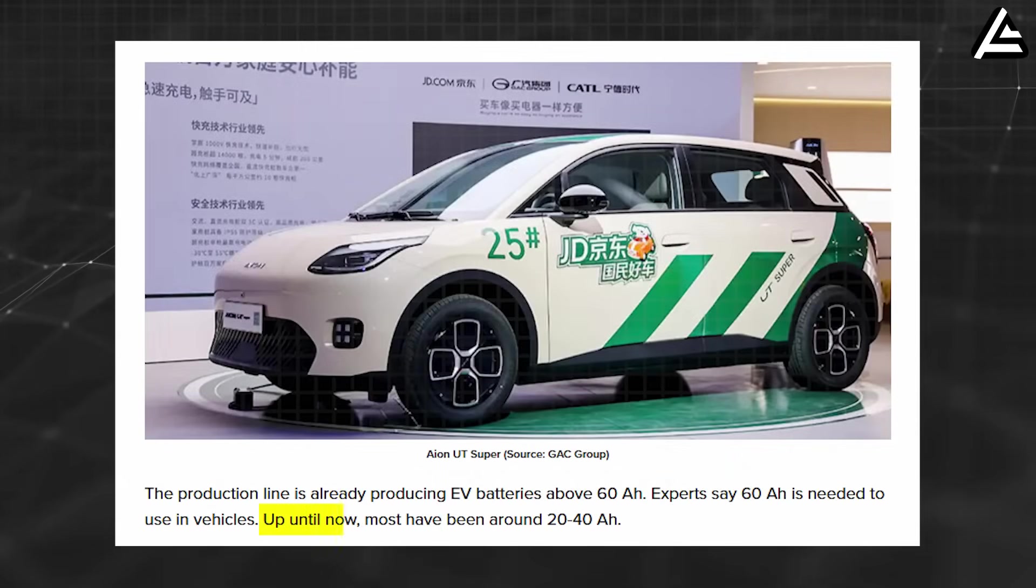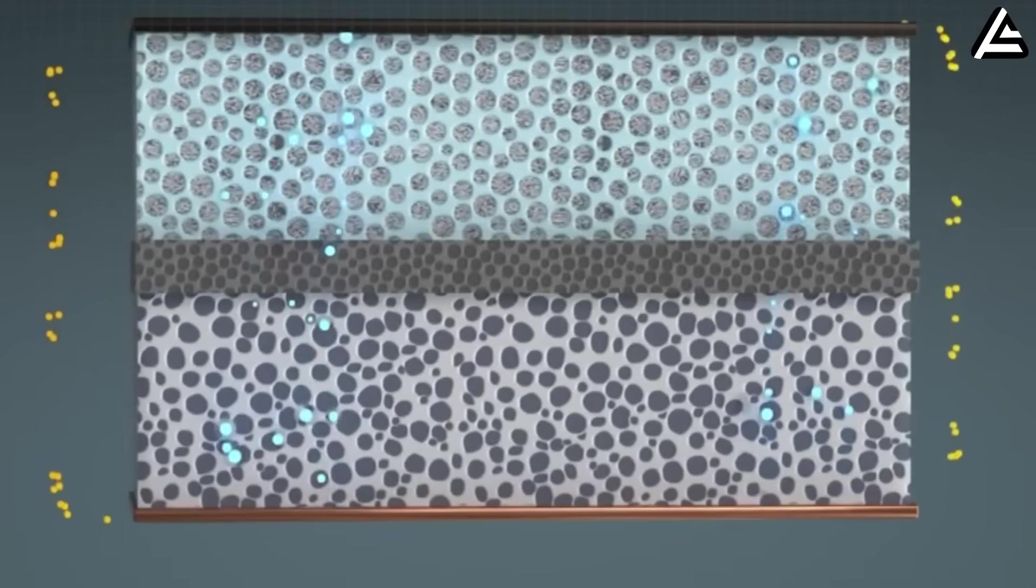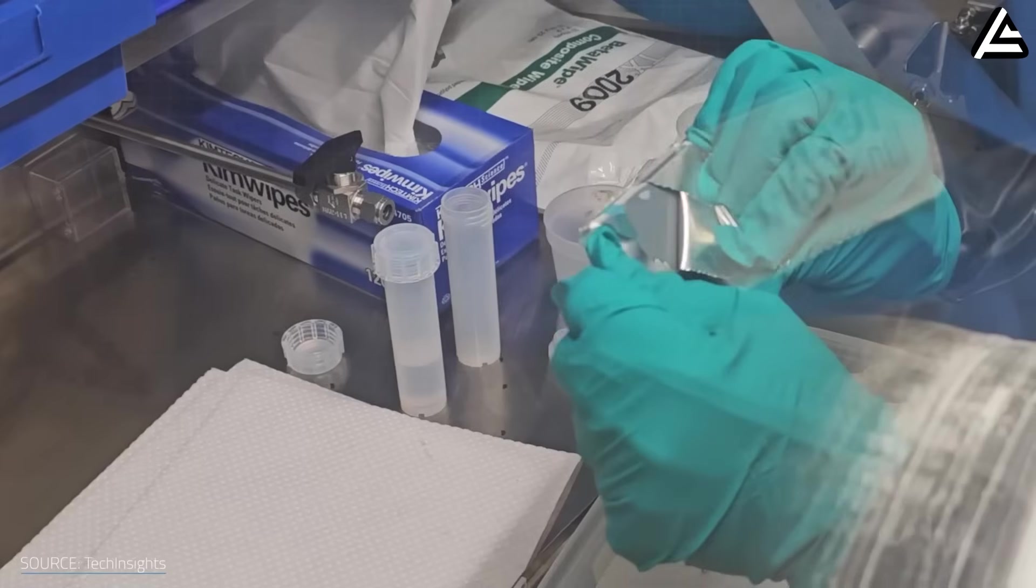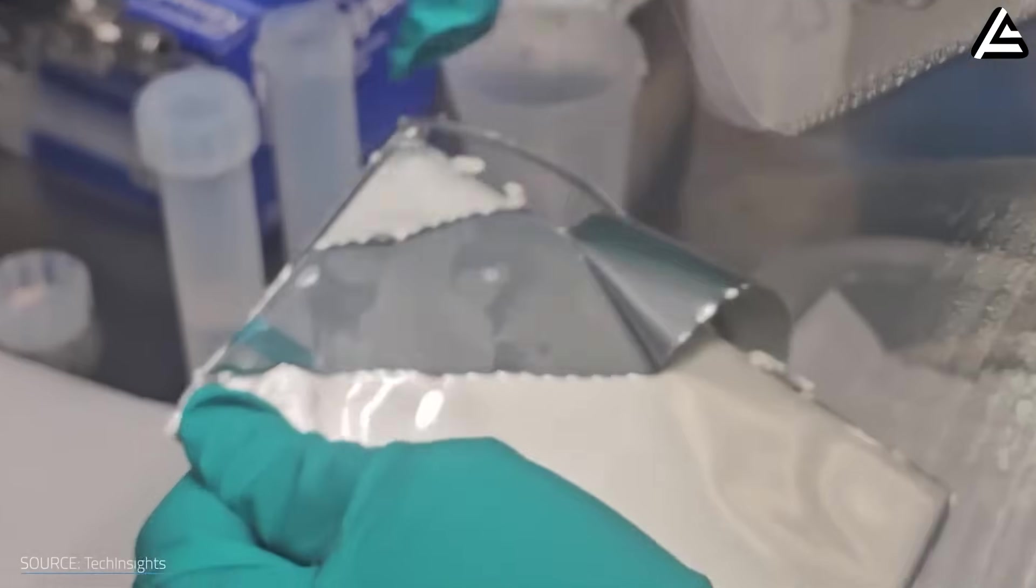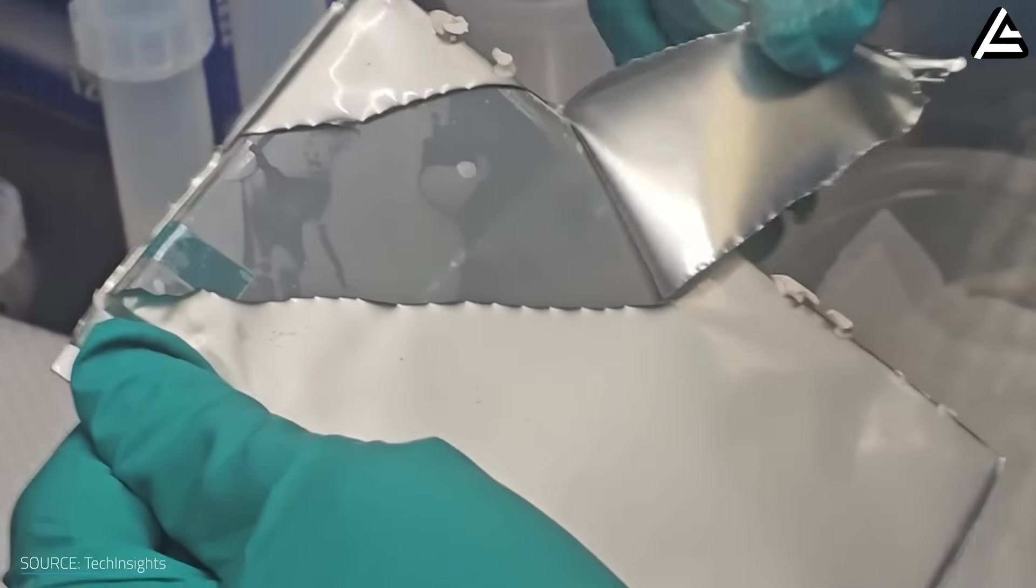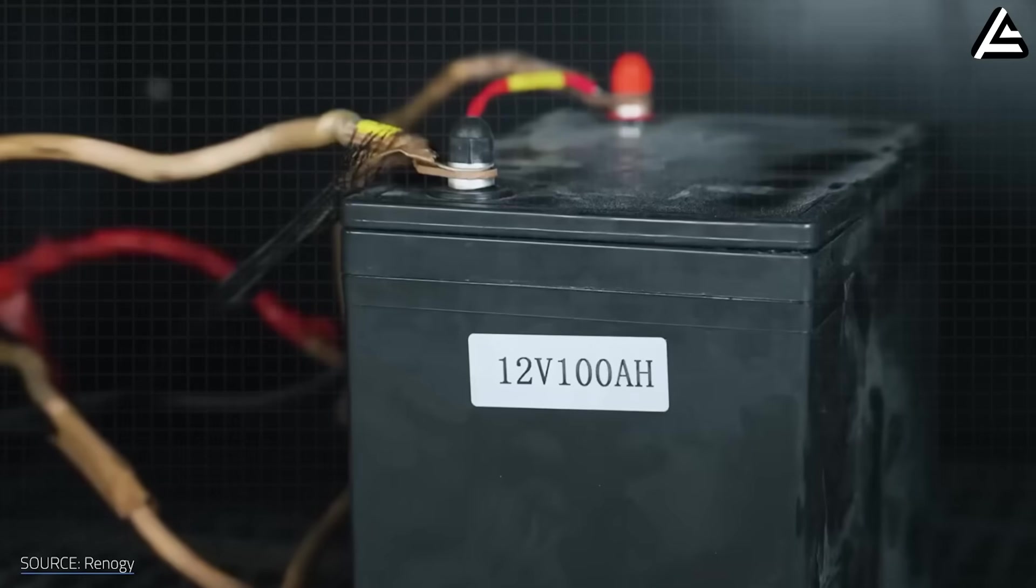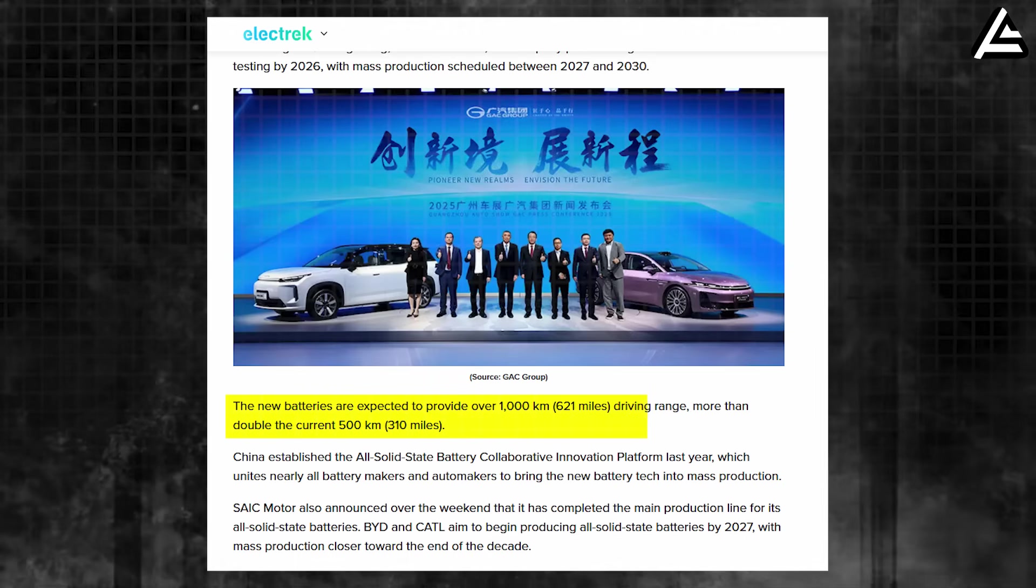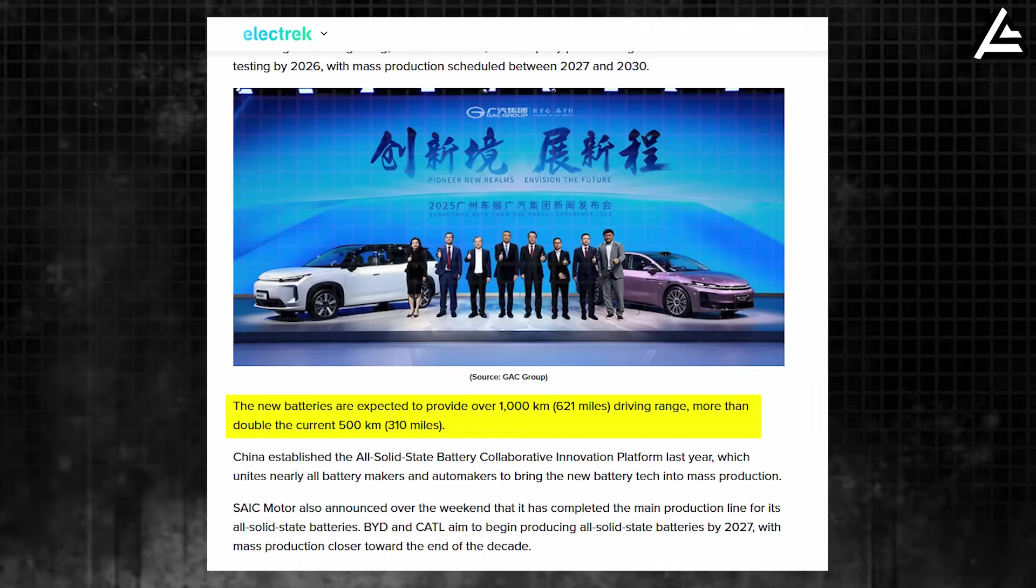To put that shift in perspective, today's lithium-ion cells sit at roughly 20 to 40 ampere-hours, jumping to 60 to 75 ampere-hours paired with near-double energy density. Heat tolerance above 300 degrees Celsius and non-flammable solid electrolytes unlocks what automakers have promised for years - safer packs and real 1,000-kilometer EVs on a single charge.